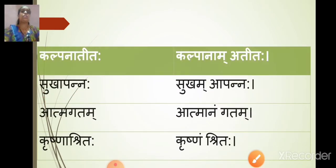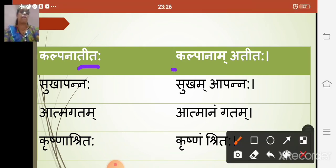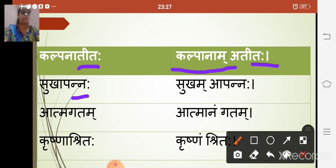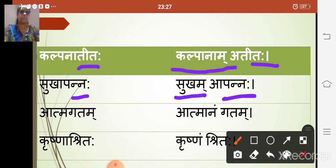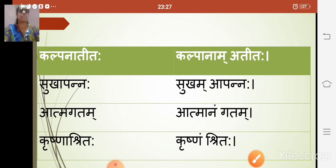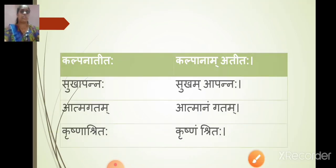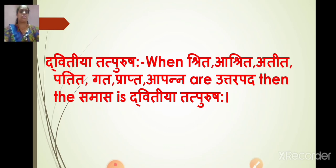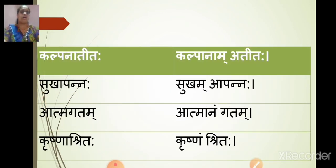Now we see examples of dvitiya tatpurush samasa. 'Kalpana atita' — kalpana means past imagination; atita means gone beyond. Kalpanaam is dvitiya vibhakti, so 'kalpana-atita' is dvitiya tatpurush. 'Sukham apana' — sukha plus apana; sukham is dvitiya. 'Atmanam gatam' — atman with dvitiya becomes atmanam, giving 'atma-gatam.' 'Krishnam ashrita' — krishnam is dvitiya; ashrita means surrendered to. These are all examples of dvitiya tatpurush samasa.